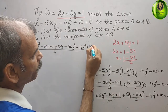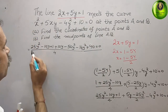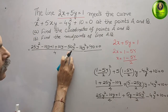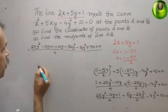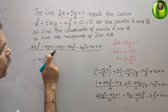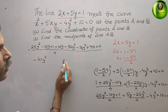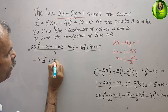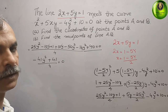Collecting like terms: 25y² - 50y² - 16y² = -41y². The -10y and +10y cancel. And 1 + 40 = 41. So we get (-41y² + 41) / 4 = 0.